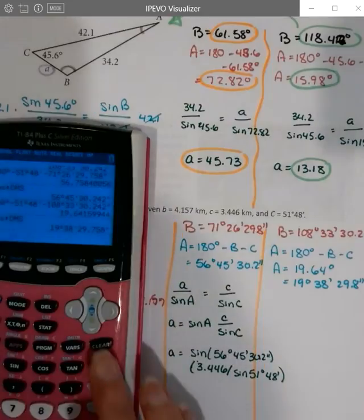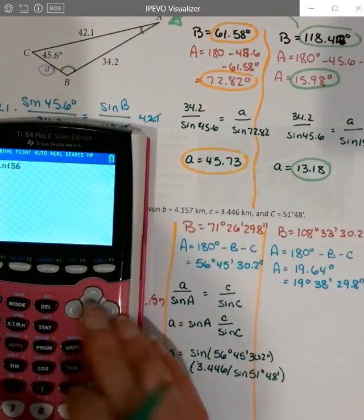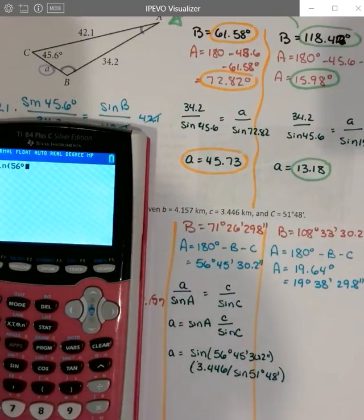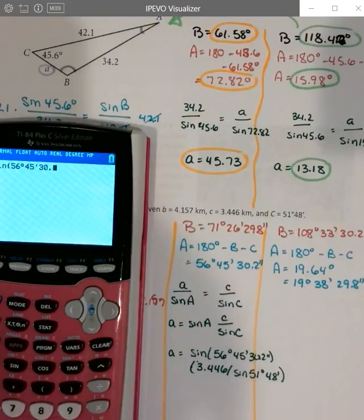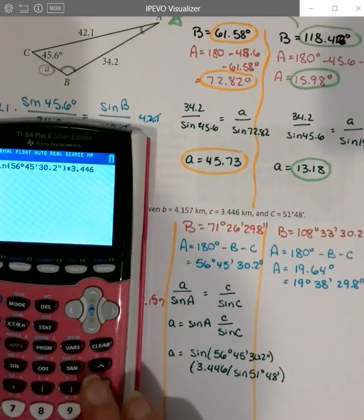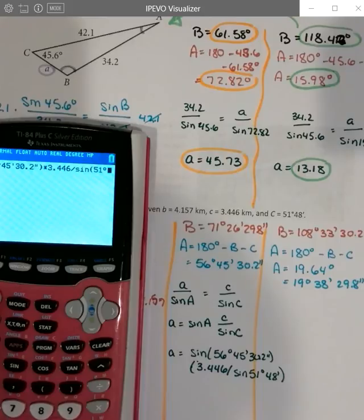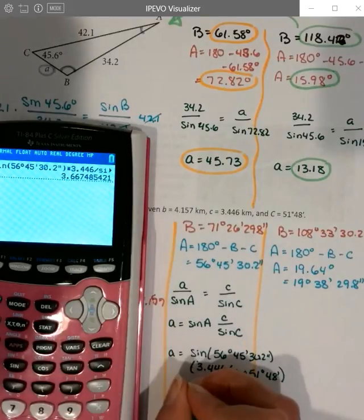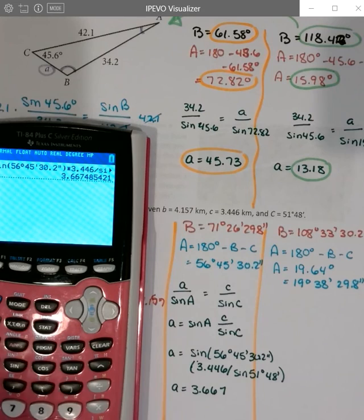Okay. Okay. So, first of all, sine of, I probably have that 56 degree up there somewhere, but I already cleared it. So 56 degrees, 45, not degrees, 45 minutes, and 30.2, I forgot where seconds was, it's right here, alpha plus seconds, times 3.446, divided by the sine of 51 degrees, 48 minutes, gives us an A value of 3.667.